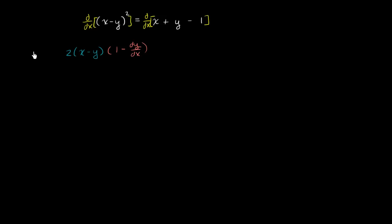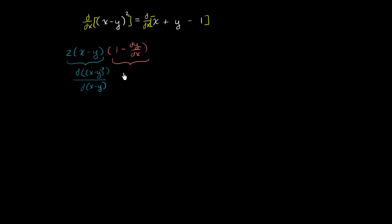To make it clearer: this part is the derivative of (x minus y) squared with respect to (x minus y), and this part is the derivative of (x minus y) with respect to x. That's just the chain rule.